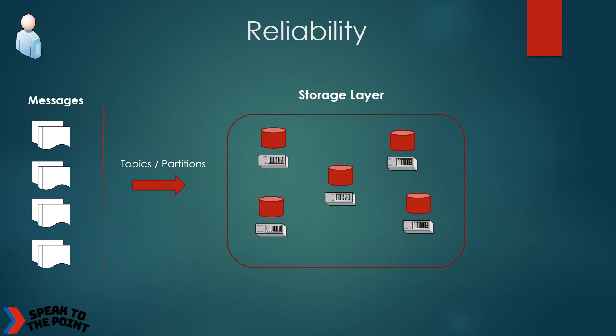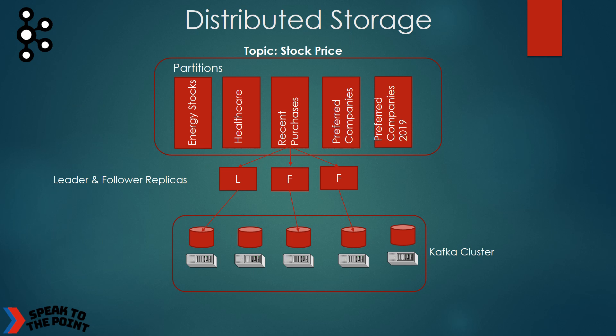We cannot rely on individual physical machines used to store the partitions — these machines may fail at any point of time. But our solution needs to be reliable. The message data should be available even when there is a machine failure, and downstream applications should be able to depend on our solution to read the data even when some machines in the storage layer fail. Partitions are replicated to increase reliability. You can specify the number of replications you want for each partition. The first replication will be the leader replica and the rest are follower replicas. Each replica is stored on a different machine. If the node or disk of the leader replica fails, the downstream applications can still rely on your storage layer because data from one of the follower replicas will be made available to them.